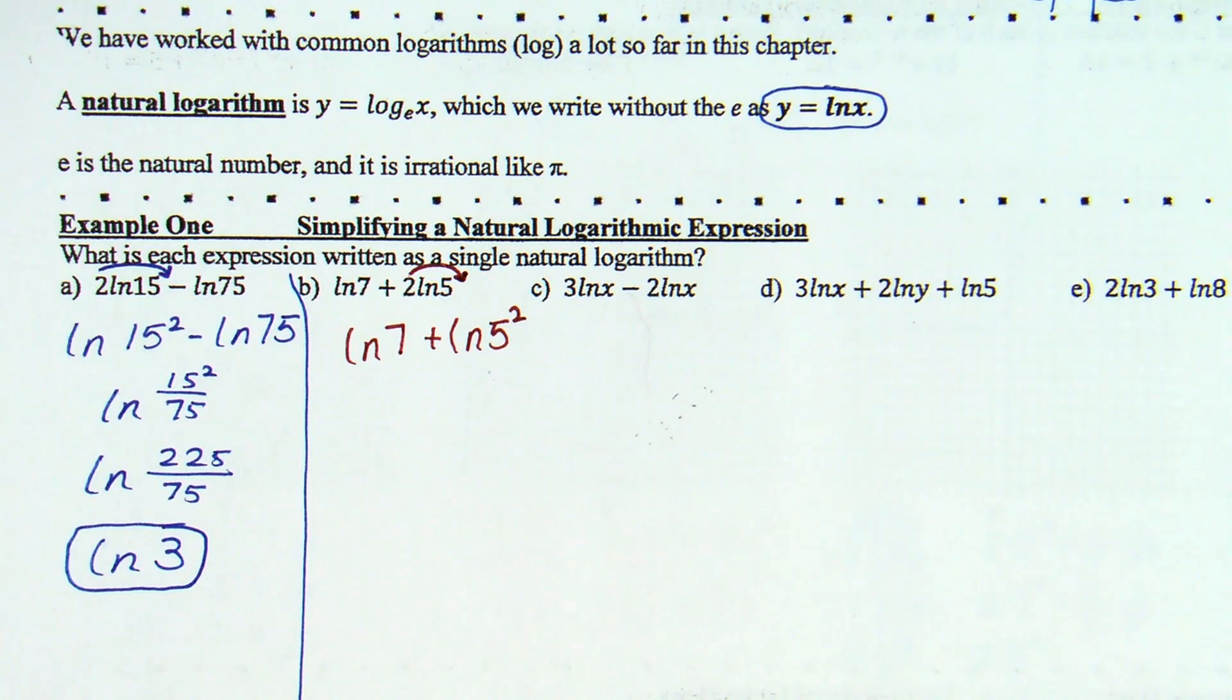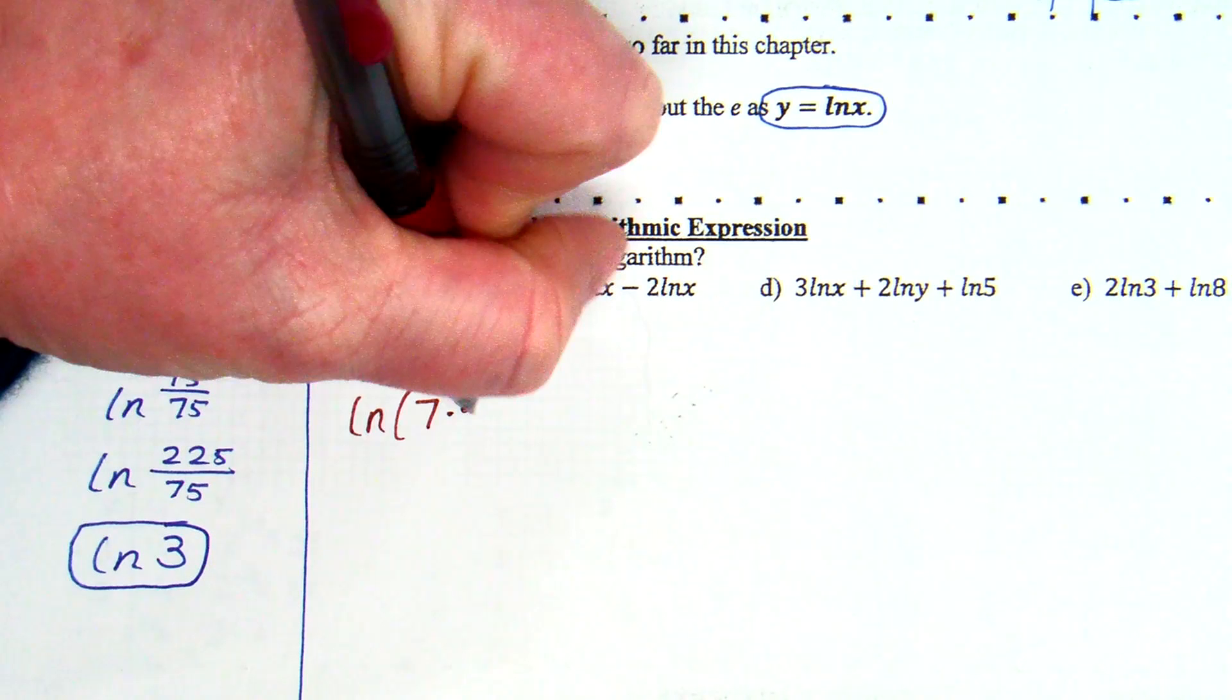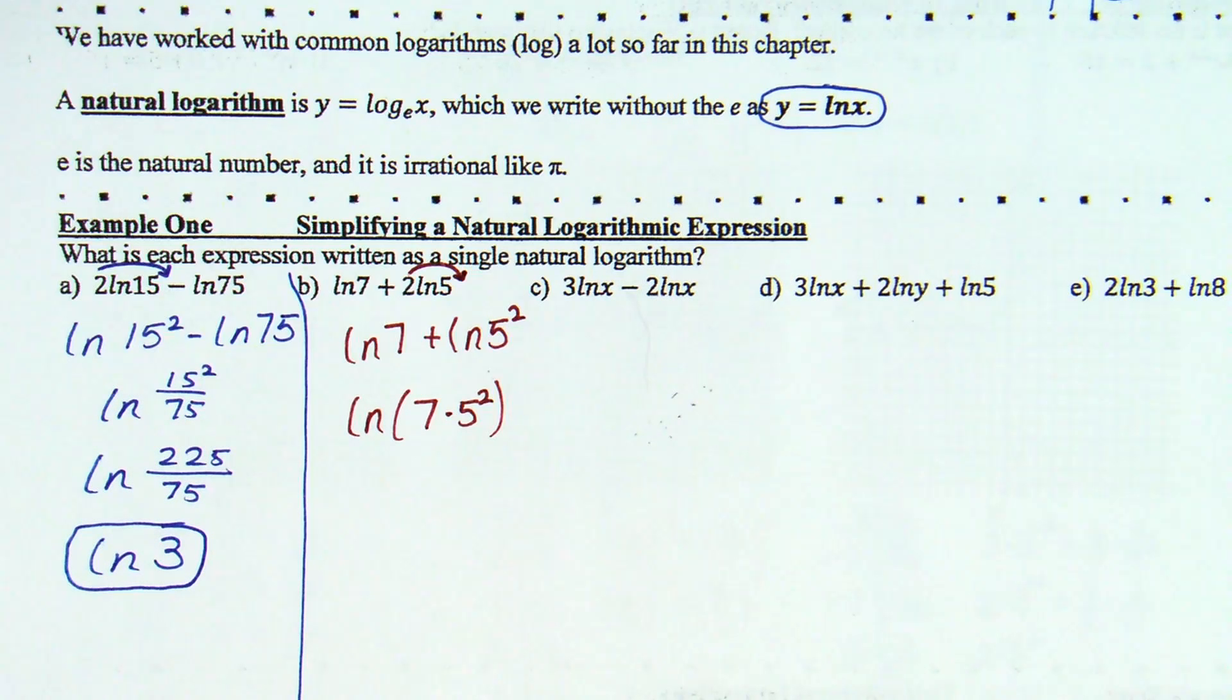What's the product property say? If two logs are being added, you can rewrite them as one log where the insides are multiplied. So, it's natural log of 7 times 5 squared. And what does your math tell you? 25 times 7, so 175. And again, we've written it as one single log. Can't really go any farther, so we'll stop there.